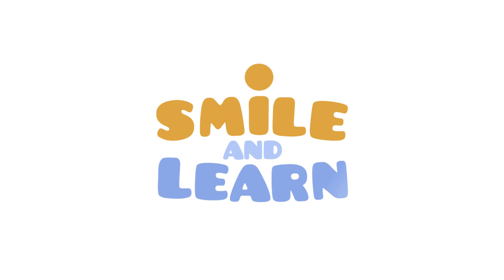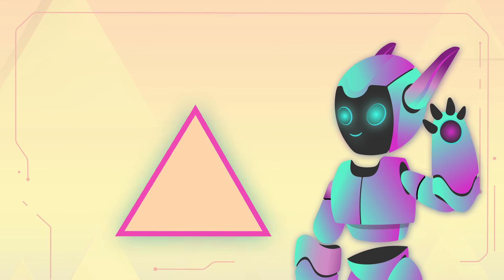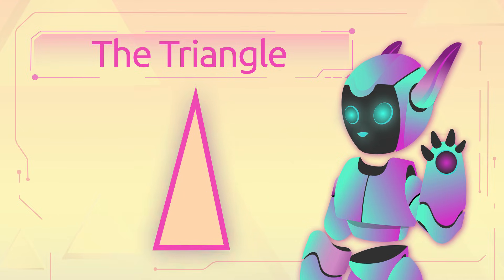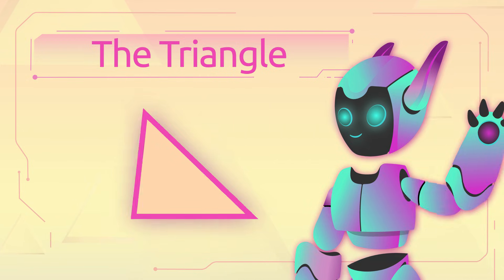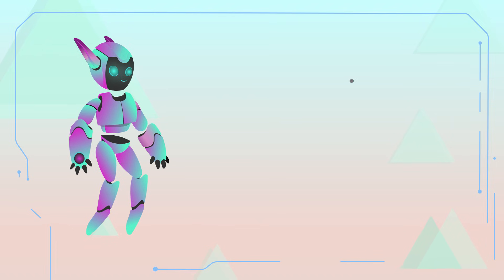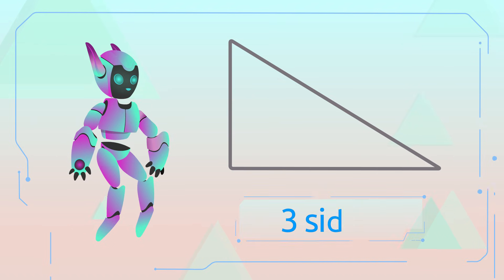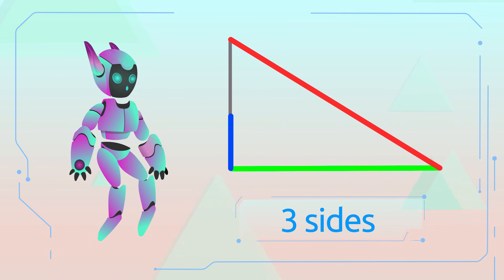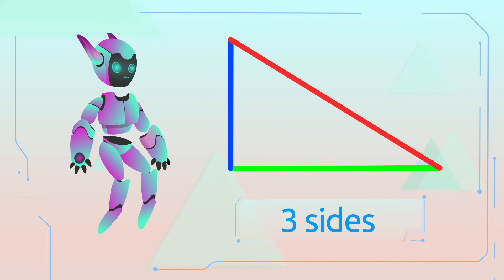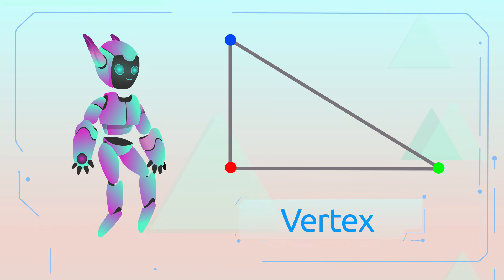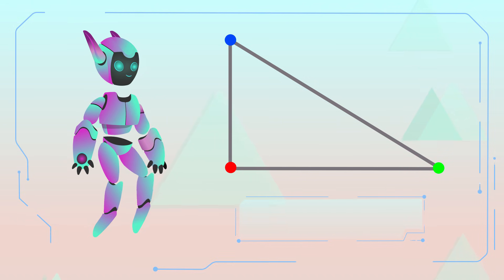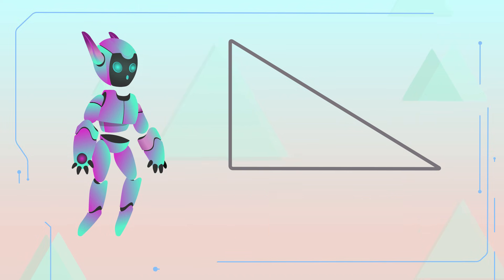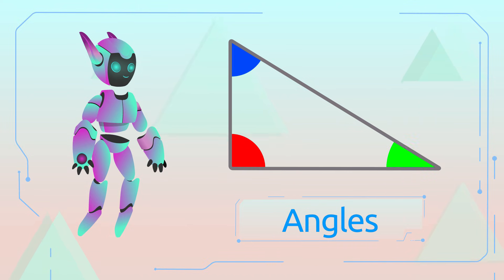Smile and learn! Today we're going to learn about the triangle. Do you know how many types of triangles there are? A triangle is a geometric shape with three sides — one, two, and three. The point where two sides meet is called the vertex, and all triangles have three vertices. There is an interior angle for each vertex.